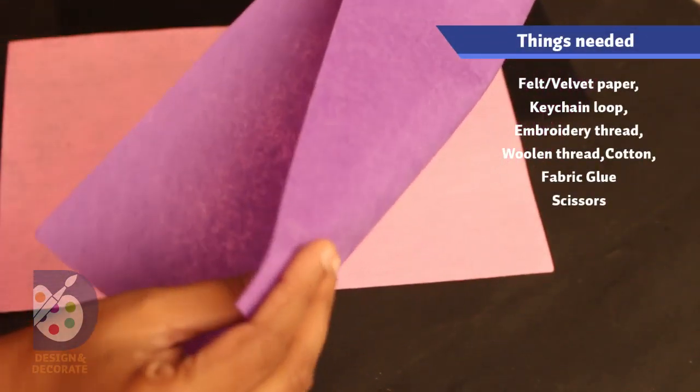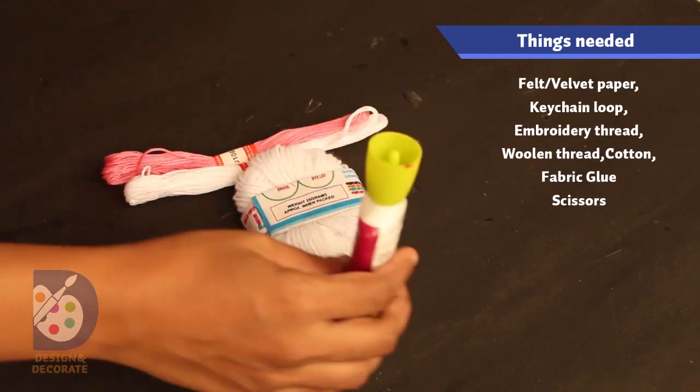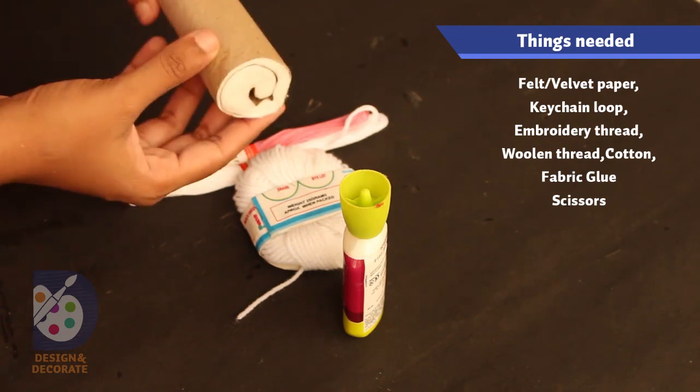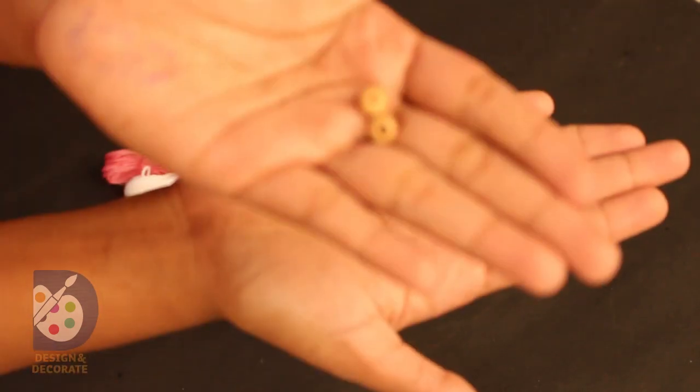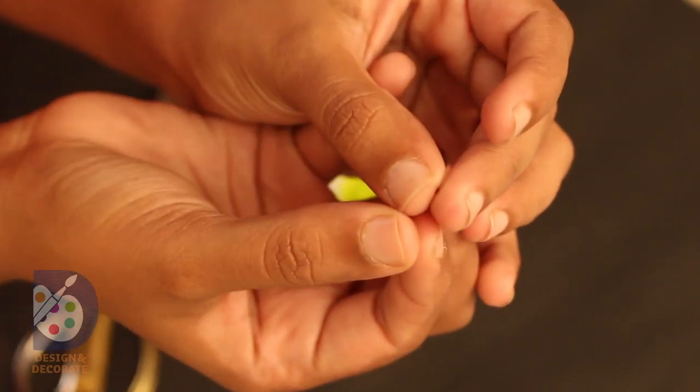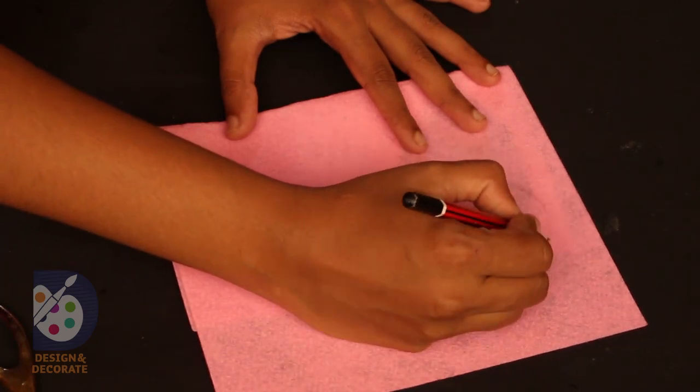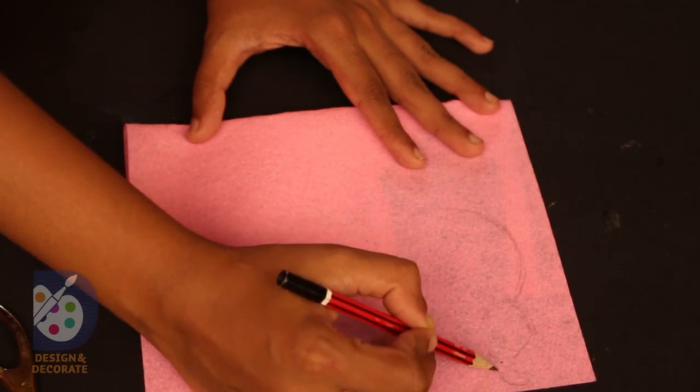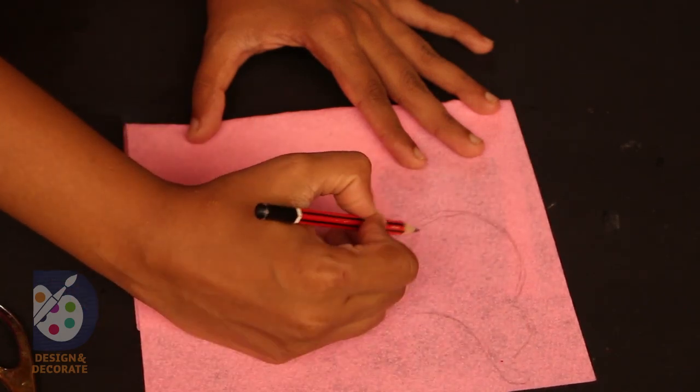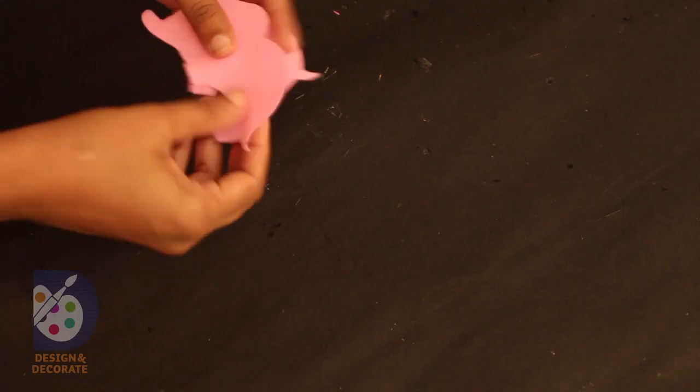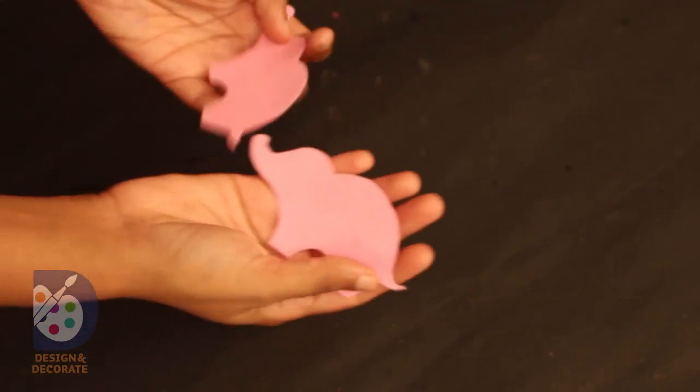First, take the cloth and draw the shape of the elephant, and then cut it out. I have taken two of them which we are going to stitch together.